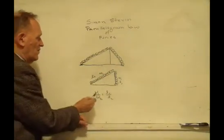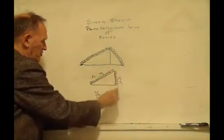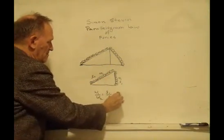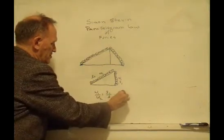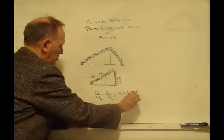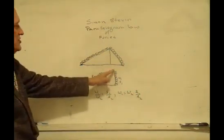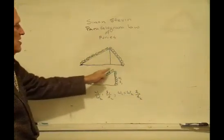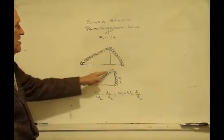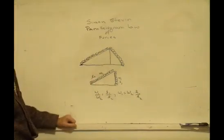Now, if I solve for w1, which is actually, of course, holding this one up, w1 is equal to w2 times l1 over l2. And remember, w1 then, is simply the actual force that is keeping this weight from sliding down the inclined plane.